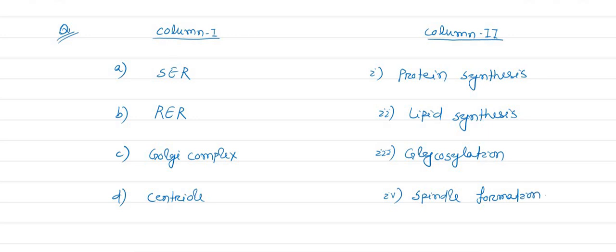So we have to match smooth endoplasmic reticulum. Column 1 has given the cell organelles and column 2 has given their functions. We have to match the correct cellular function with the right cell organelle. Smooth endoplasmic reticulum is meant for lipid or fat synthesis in the cytoplasm.